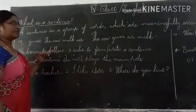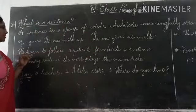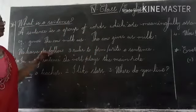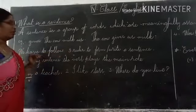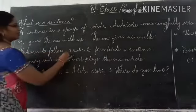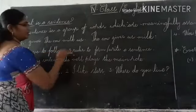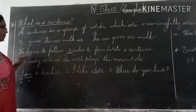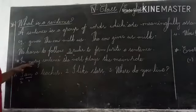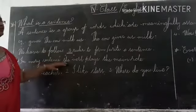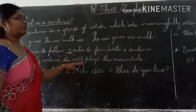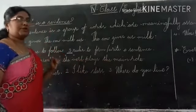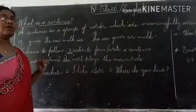To make a sentence and to form a sentence, we have to remember the following three rules. How many rules? Three rules we have to remember. What are those? In every sentence, the verb plays the main role.